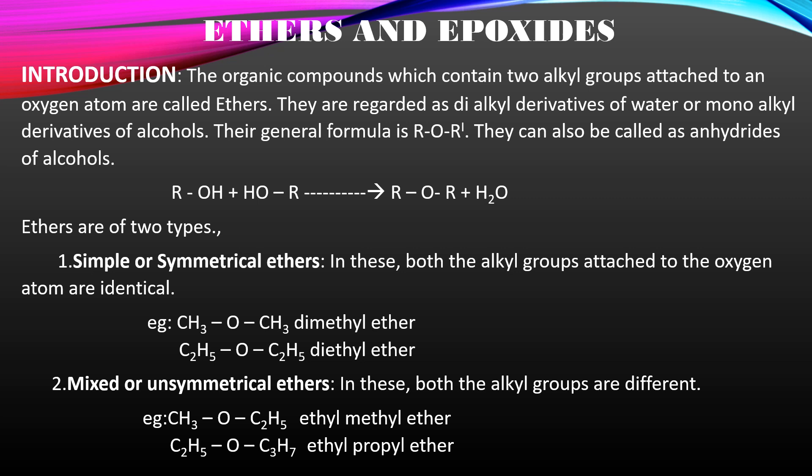Ethers are of two types: simple and mixed ethers. Simple ethers can also be called as symmetrical ethers. In simple ethers, both the alkyl groups attached to the oxygen atom are identical. For example, CH3OCH3 — both alkyl groups are methyl groups, hence it is called dimethyl ether. C2H5OC2H5 — both are ethyl groups, hence it is called diethyl ether.